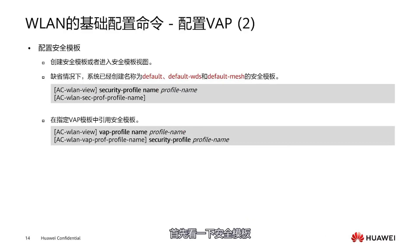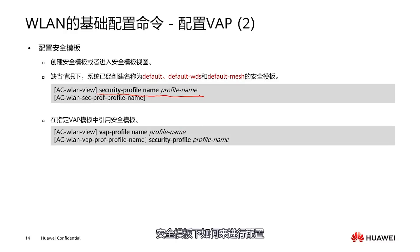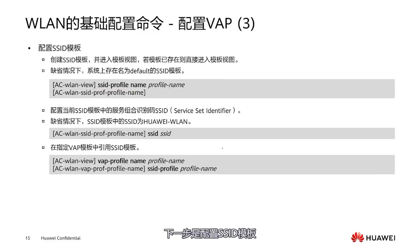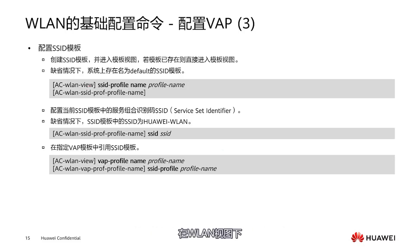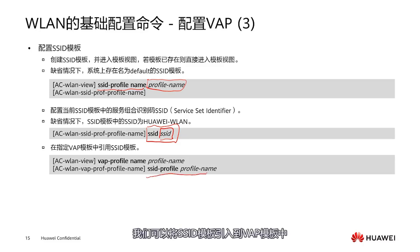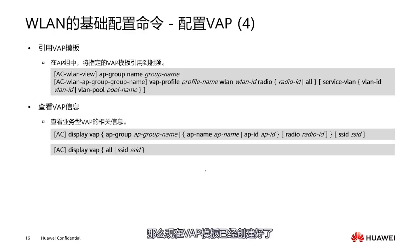After configuring the service VLAN, we also need the security template and SSID template. First, create a security template. As discussed in the WLAN security session, we have Open, WEP, WPA, and WPA2 — we need to choose one under the security template. After it's created, we introduce this security template into the VAP. Next, configure the SSID template. Under WLAN settings, use 'SSID profile name' followed by a name to create an SSID template. Here we set the SSID name — this is what we see when searching for wireless signals. After it's created, we introduce the SSID template into the VAP template.